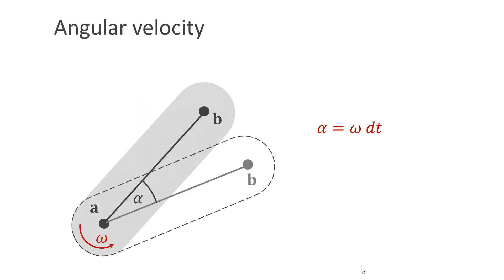We will rotate the flipper about A in our simulation. For this, we need the concept of angular velocity — a simple number called omega that tells us how fast something rotates, with units of angle per second. In the simulation, we will give the flipper a fixed angular velocity. At every time step, we multiply omega by the time step size to compute the angle by which we need to rotate the capsule about A.